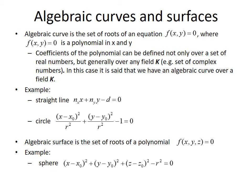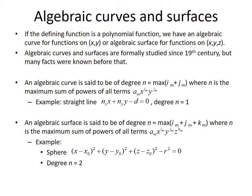2D and 3D point sets defined by a polynomial function are called algebraic curve and algebraic surface respectively. Algebraic curves and surfaces as such are formally studied since 19th century, but many facts were known before that.